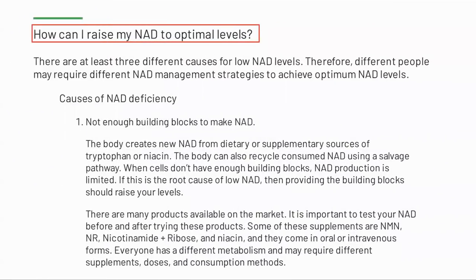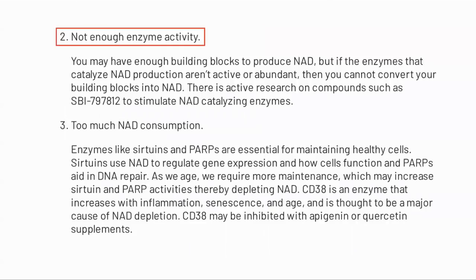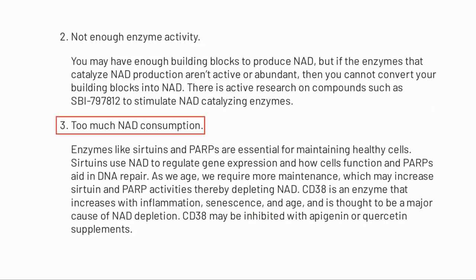The report then discusses what we could do to raise our NAD based on the cause of deficiency. Number one: not enough building blocks. Number two: not enough activity in the enzymes building NAD from these blocks. And finally, too much consumption — too much CD38 consuming the NAD, as we've spoken about before on the channel. My plan is to address items one and three with liposomal NMN and apigenin.